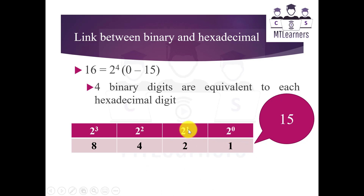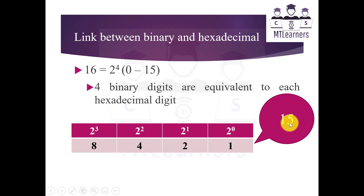The columns in the table use 2^0, 2^1, 2^2, and 2^3 — all using binary numbers, giving values 1, 2, 4, and 8. If we sum up all of these values we get 15, which is the highest value in the case of hexadecimal, and the lowest value is 0. So 0 to 15 are the numbers used in hexadecimal.